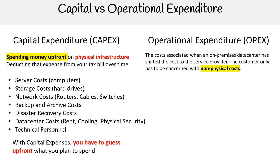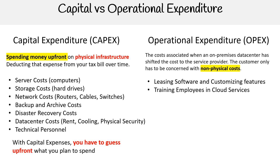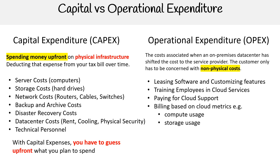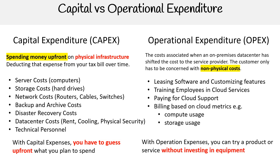Examples of OPEX costs include leasing software and customizing features, training employees in cloud services, paying for cloud support, and billing based on cloud metrics such as compute usage and storage usage.